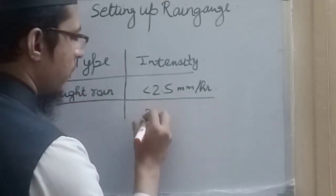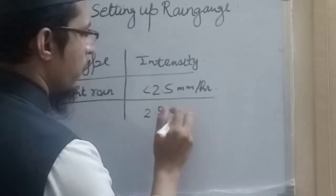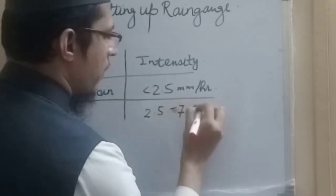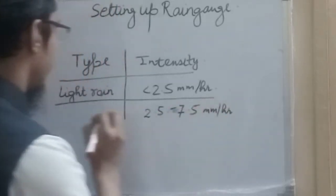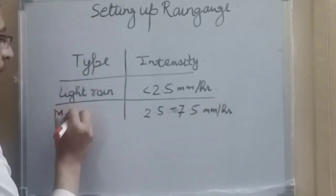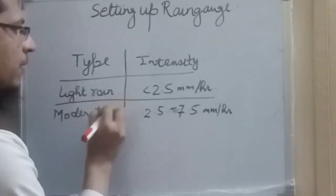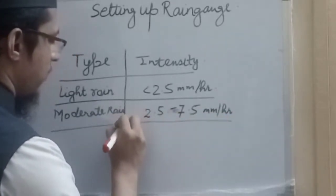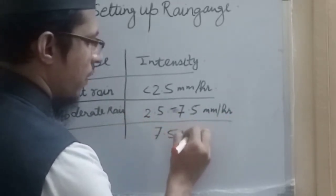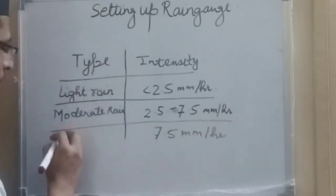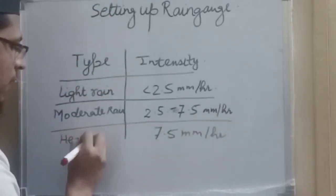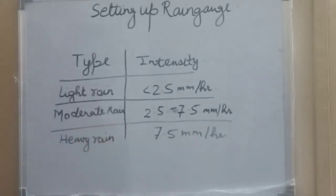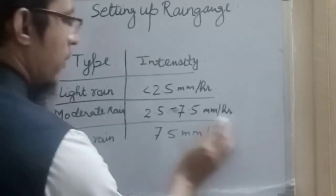And if intensity is even higher, that is greater than 7.5 mm per hour, then it is classified as heavy rain. So this is related to splashes. When we place the rain gauge, we have to take care that there are minimum splashes. So rainfall intensity plays a major role in that. So now we will discuss what precautions or how we should select a site for placing the rain gauge.